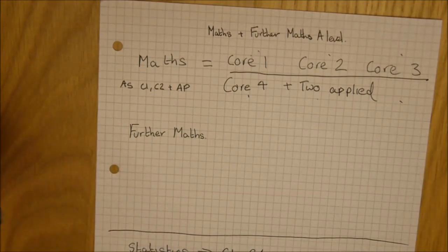The AS modules are core 1, core 2, S1, M1, D1, and FP1, the first further pure paper.